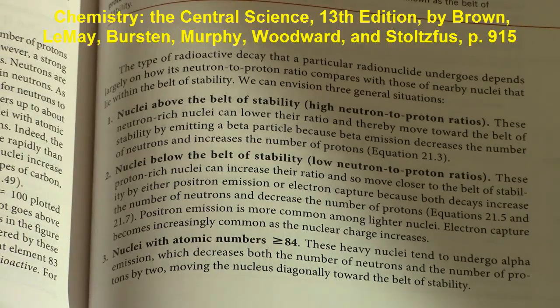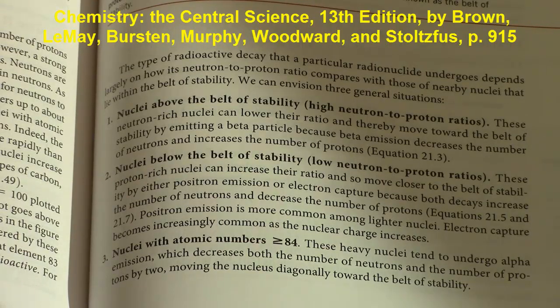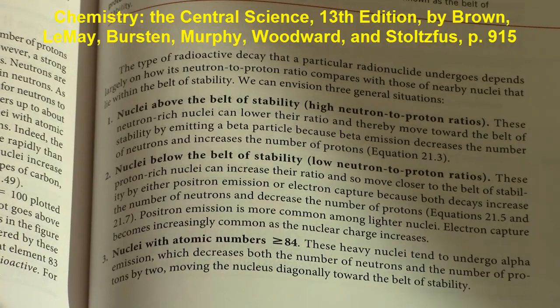Second, are nuclei below the belt of stability which have a low neutron to proton ratio. These proton-rich nuclei can increase their ratio and so move closer to the belt of stability by either positron emission or electron capture because both decays increase the number of neutrons and decrease the number of protons. Positron emission is more common among lighter nuclei. Electron capture becomes increasingly common as the nuclear charge increases.